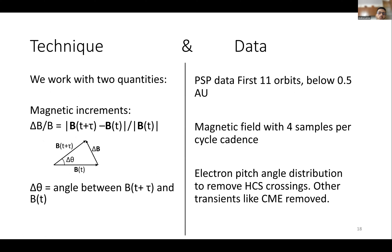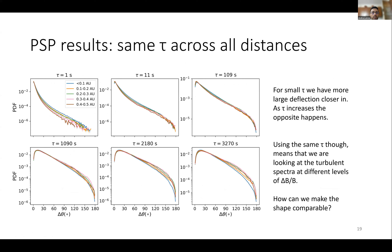To answer these questions, we use magnetic increments as described, and use data from the first 11 orbits of PSP considering only data below 0.5 AU where data quality is much better. Magnetic field data at four samples per cycle are used, and from the SWEAP suite we use electron pitch-angle distributions to remove heliospheric current sheet crossings, as they are not part of the standard solar wind fluctuation population, along with other transients like coronal mass ejections.